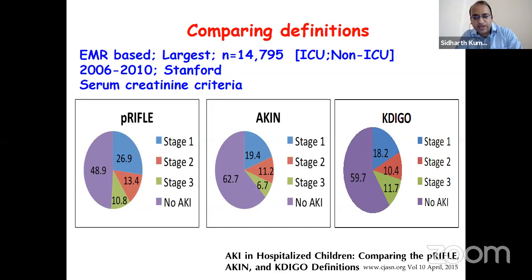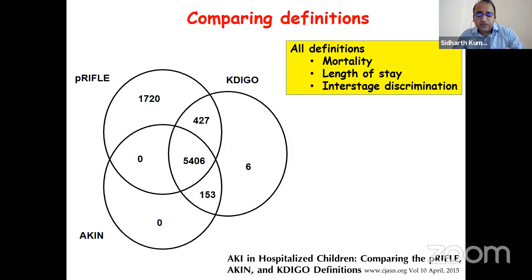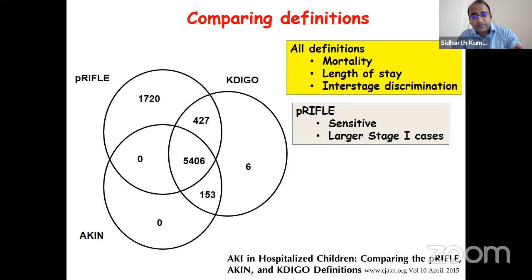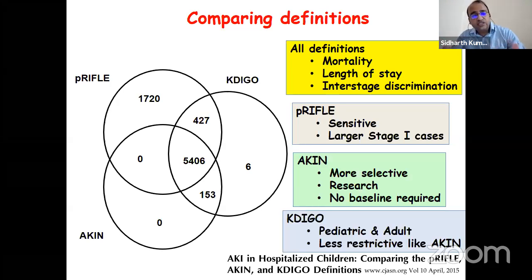P-RIFLE selects more stage one criteria, making it more sensitive—it diagnoses more stage one compared to AKIN and KDIGO. Whatever definition you use, all definitions and all stages predict mortality, with higher stages predicting more mortality. They all show good inter-stage discrimination and correlate with ICU length of stay. P-RIFLE is more sensitive while AKIN is more selective, used more in research settings. Since KDIGO is used for both pediatrics and adults, and children graduate to adults, we now use the same definition for all age groups.